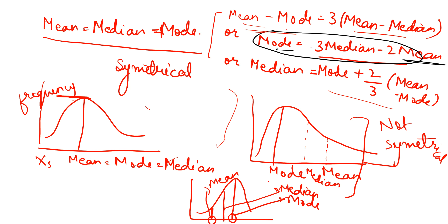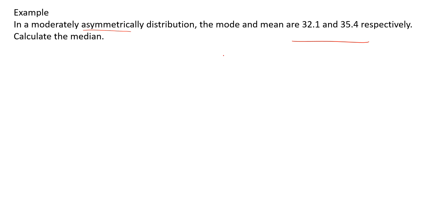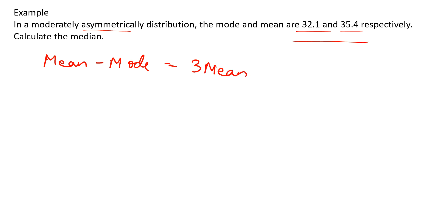Because the distribution is symmetrical in the symmetric case, mean equals median equals mode and all three relations reduce to the same thing. But here we are given an asymmetrical distribution where mean and mode are different. We use the relation: mean minus mode equals 3 times (mean minus median). My mean is 35.4 and my mode is 32.1.